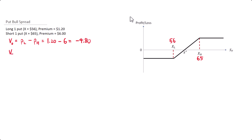We will calculate the value at expiration for the underlying asset. We take the payoff of the lower strike put minus the payoff of the higher strike put. For the lower strike put, the payoff is the maximum of 0 and (56 minus the share price at expiration), then minus the maximum of 0 and (65 minus the share price).